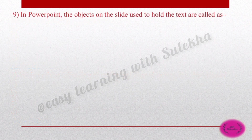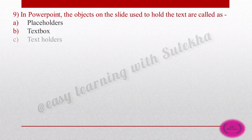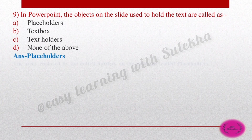Question 9: In PowerPoint, the objects on a slide used to hold the text are called as — placeholder, text box, text holder, none of the above. The right answer is placeholder — the area enclosed by the dotted borders on a slide is called a placeholder.